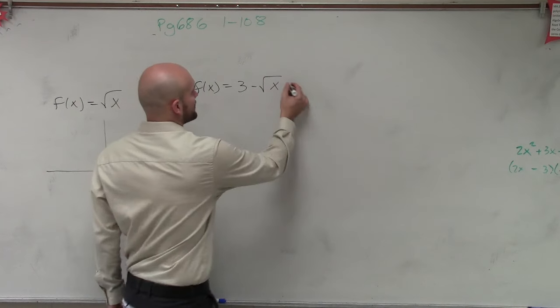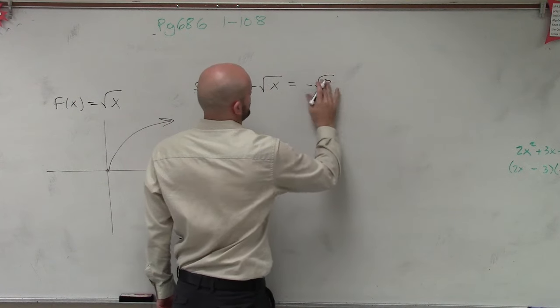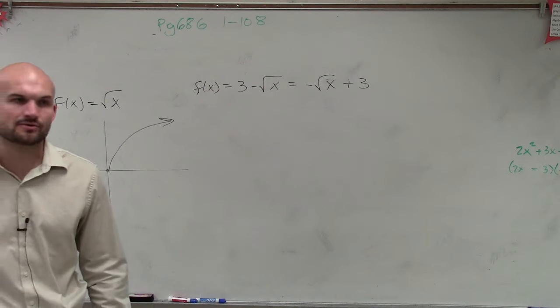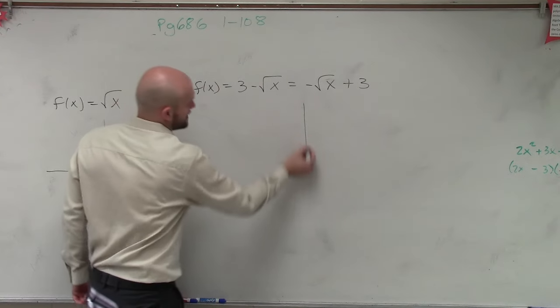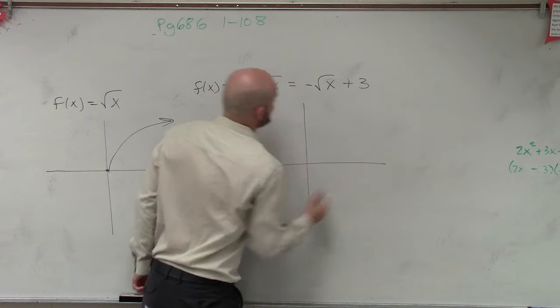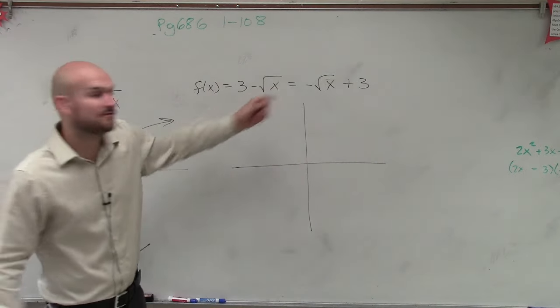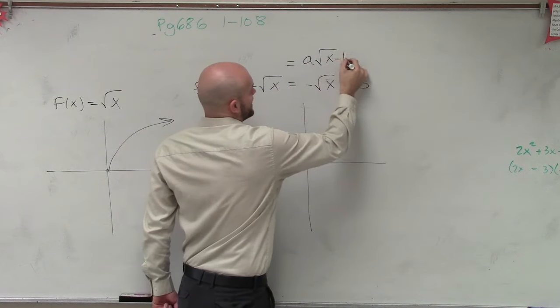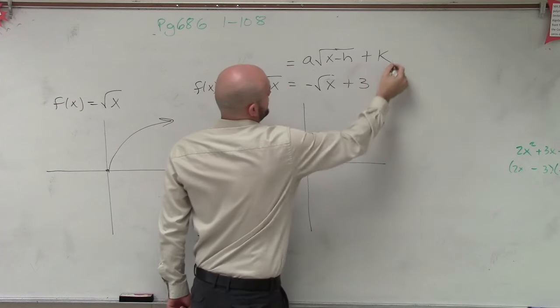Now let's go ahead and rewrite this and see if we can remember what our transformations are going to tell us about this graph. We need to remember we can have transformations of a function. Our function can be rewritten as a times square root of x minus h plus k.